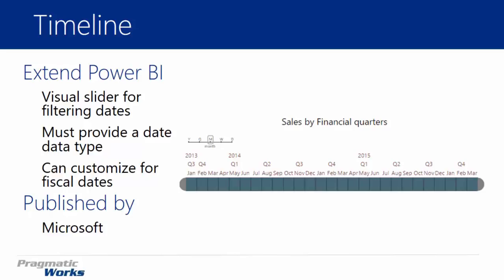You have quite a few customizations available in the timeline. We're going to look at some of those, including changing how the slicer looks visually, but you'll also be able to change things like when your fiscal calendar begins. So if you're Microsoft, for example, who has a fiscal calendar that begins in July, you would change the timeline so that it begins on July 1st. You're also able to set what is the first day of the week for your company — whether your organization recognizes Monday or Sunday as the first day of the week.